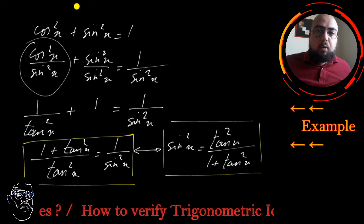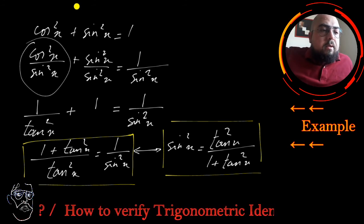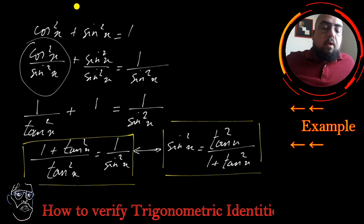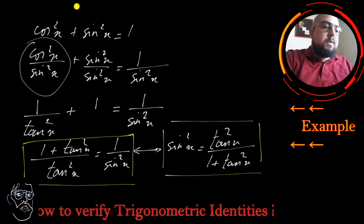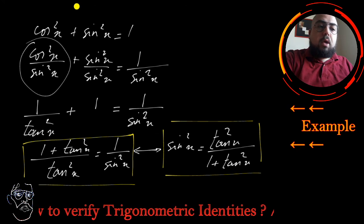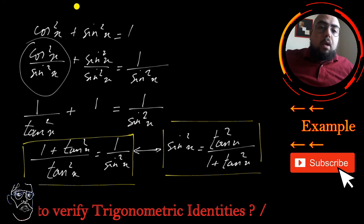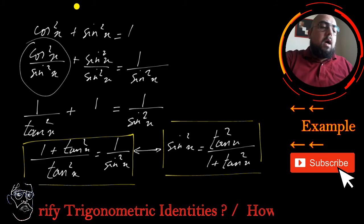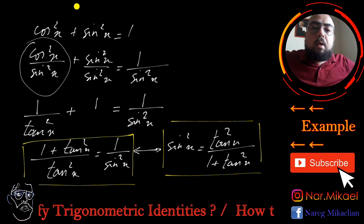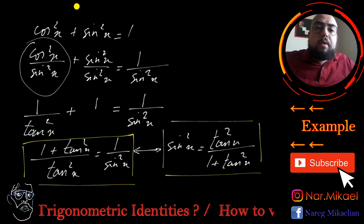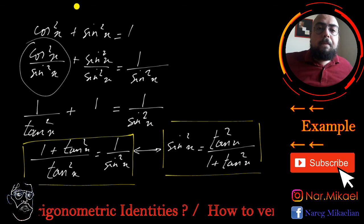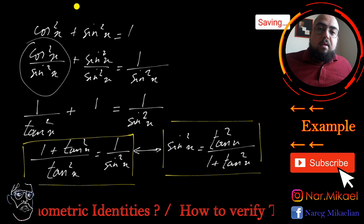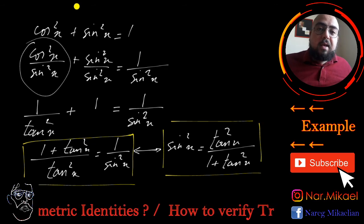Those are some examples of trigonometric identities. You now know how to follow the steps and demonstrate that the A part equals the B part. That's all for today — I hope it was helpful. Please subscribe to my YouTube channel so you'll be notified when I upload new videos. You can also follow my Instagram and Facebook, or leave a comment below. See you next time.